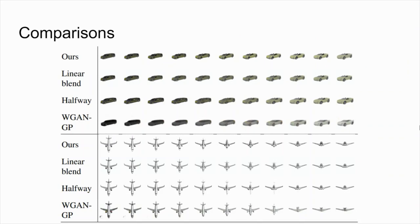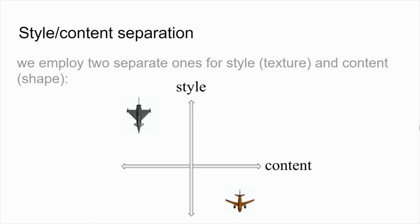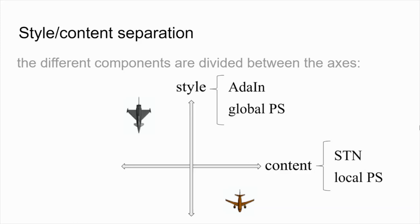Please refer to the paper for a user study report. Classically, a morphing effect showcases a single-direction transformation along the time axis. We notice that our system is composed of building blocks that allow for a rather straightforward two-directional transformation along two axes: one for style, which is the texture, and the other for content, which is the shape. To generate such morphing effects, we control the extent of contribution of style elements from each of the two inputs by regulating the adaptive instance normalization and the global perceptual similarity. The shape elements are regulated by the spatial transformer and the local perceptual similarity. More details can be found in the paper.